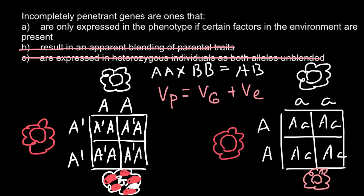Many genetic disorders are also triggered by environmental factors. One real-life example is multiple sclerosis, which can be found in only 30% of monozygotic twins — meaning it has a genetic basis, but 70% of monozygotic twins don't develop this disorder, showing it is also influenced by environment. Environmental factors such as viral infection or even a common cold can trigger this genetic disease. So the correct answer is A.